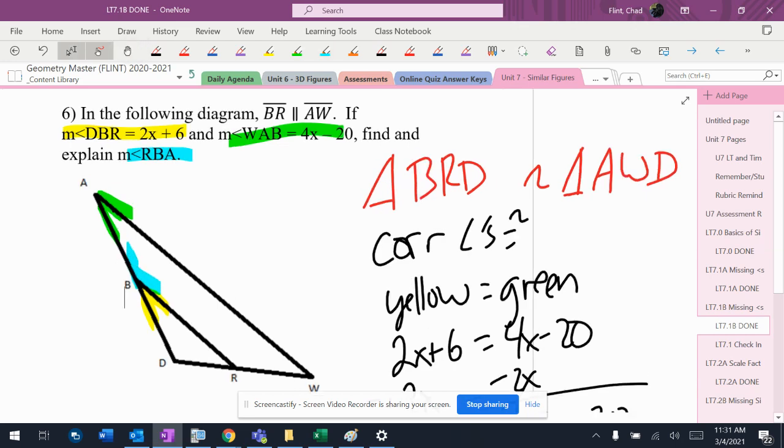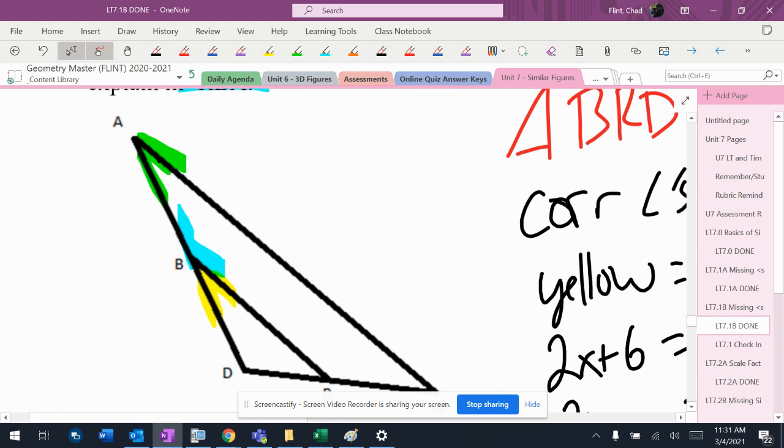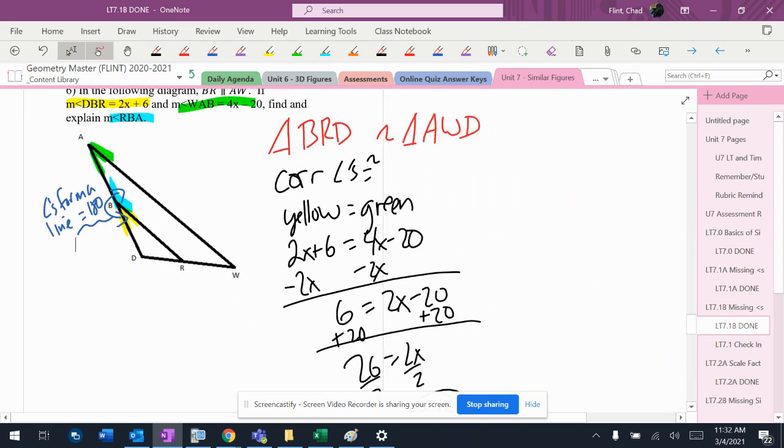Now here's the issue with this. That isn't even an angle in the triangle. I can't use similar triangles or the parallel lines to do that. What I can do though is these two angles right here make a straight line. So angles form a line, and whenever that happens, they have to add up to 180 degrees. So that means if I find that yellow angle...